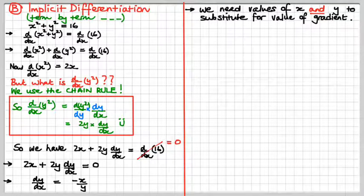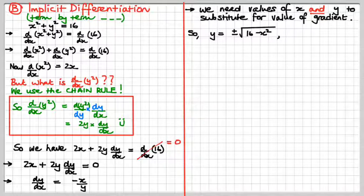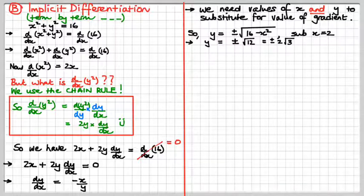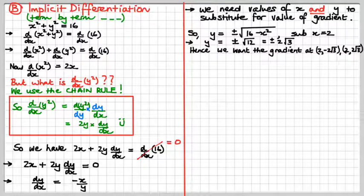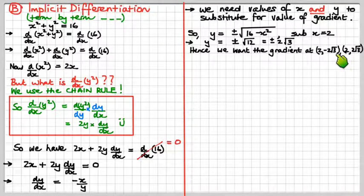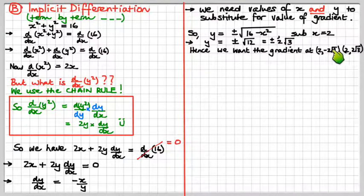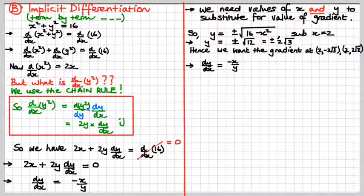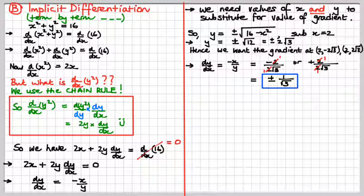We know x is 2, so we substitute that into the original equation to find y: y equals plus or minus root 12, which is plus or minus 2 root 3. So dy/dx equals minus x over y. Plugging in, we get plus or minus 1 over root 3 — exactly what we got before using the traditional technique.